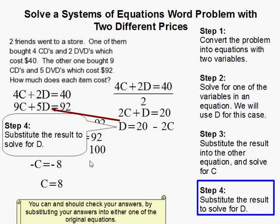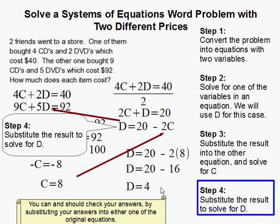Finally, we can substitute that C back into here. Remember C is 8. So, instead of putting a C here, I can put 8. That's 20 minus 16. So, that means D is equal to 4.